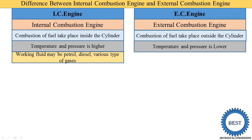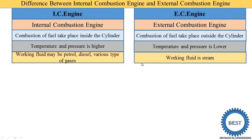In an internal combustion engine, the working fuel may be petrol, diesel, or various types of gases — those already used in bikes and cars. In an external combustion engine, the working fluid is steam. The steam is produced by burning coal, wood, or any other waste material. The heat energy of the coal and wood is supplied to water, which is converted into steam, and this steam is supplied inside the cylinder.